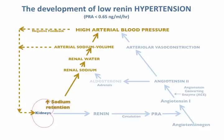But blood pressure does not stay at normal levels when the kidneys retain even more sodium. The arterial sodium volume increases even more, but the higher arterial pressure cannot exert a greater negative feedback effect on renin secretion because renin secretion is maximally suppressed. Arterial pressure rises, and that, in our view, is how low renin hypertension develops.